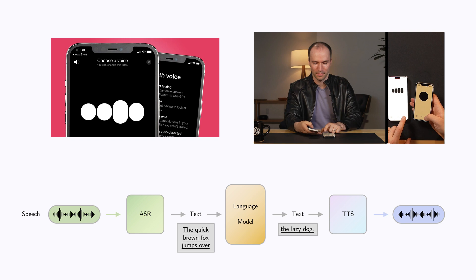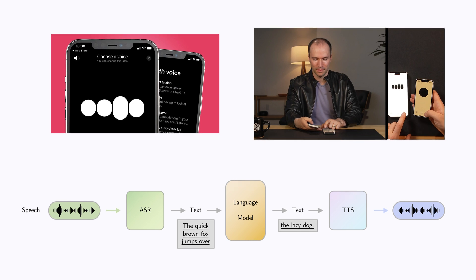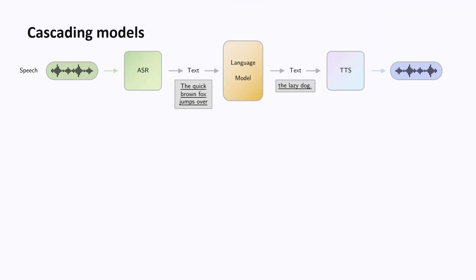We are getting close to real-time spoken conversations with AI. If you were trying to build a system like this, you might come up with something like a model that turns speech into text, then a model to process the text, and then a third model to turn the text into speech. This is similar to putting together models like Lego blocks, and it's called cascading models.